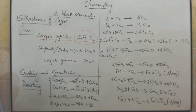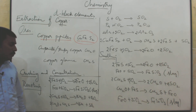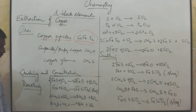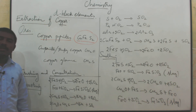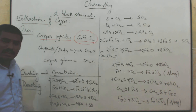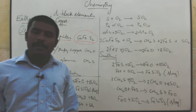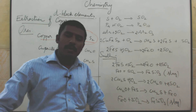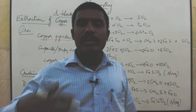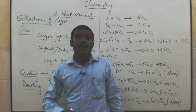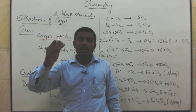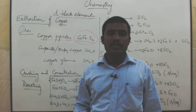During Bessemerization, copper sulphide reacts with oxygen to give Cu₂O plus SO₂. Copper oxide reacts with cuprous sulphide to give copper plus SO₂. This impure copper is named blister copper. It is not pure, so you have to use the electrolytic refining method — using anode, cathode, and electrolyte.